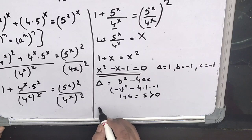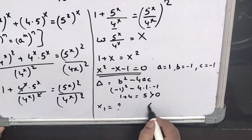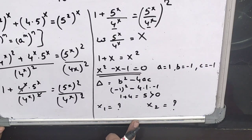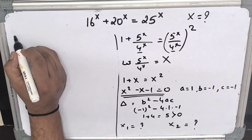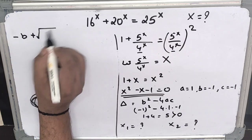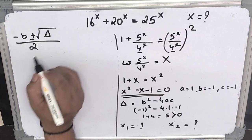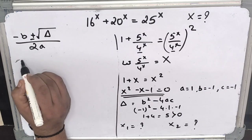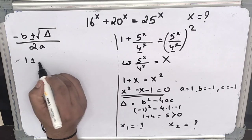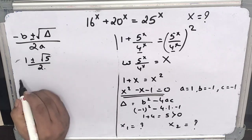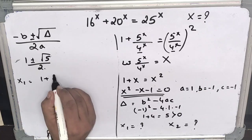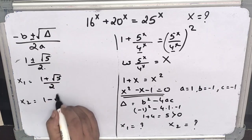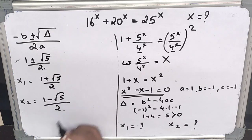Since delta is greater than 0, we get two values X1 and X2. Using the quadratic formula: X equals minus b plus or minus square root of delta, over 2a. This gives us X1 equals 1 plus square root of 5, over 2, and X2 equals 1 minus square root of 5, over 2.